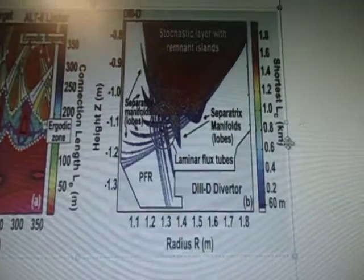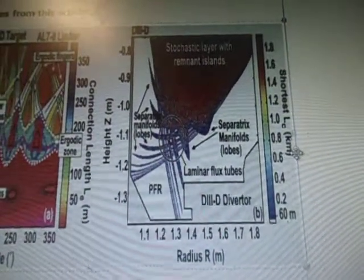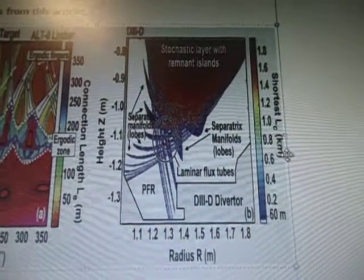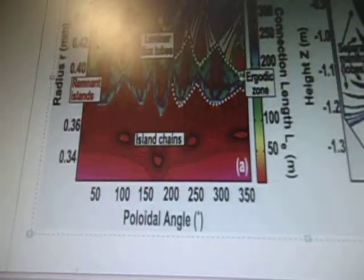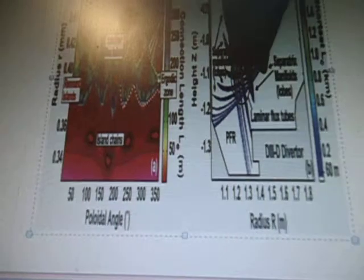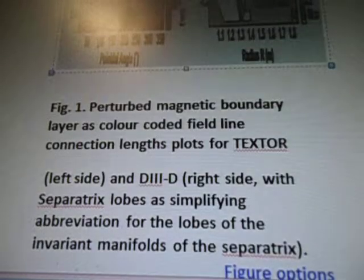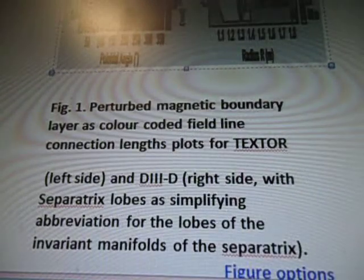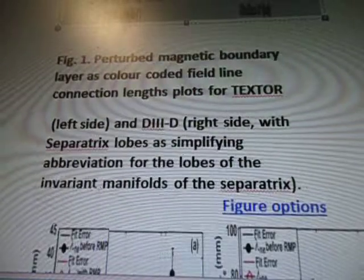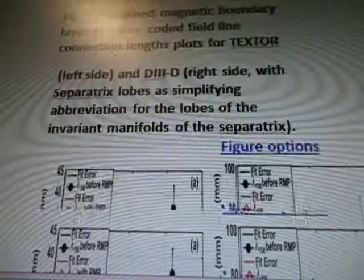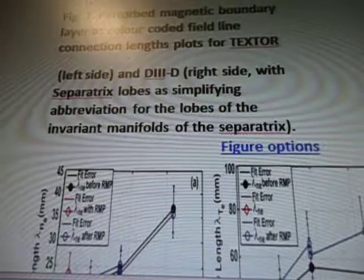D3-D diverter, with height Z and the shortest L radius, separatrix. That's what it looks like. I'm going to shrink it back again so we can fit it into the video. Let's scroll down here. Perturbed magnetic boundary layer as colored field line connection length plot for TEXTOR — left side — and D3-D — right side — with the separatrix lobes as simplifying abbreviation for the lobes of the invariant manifolds of the separatrix.